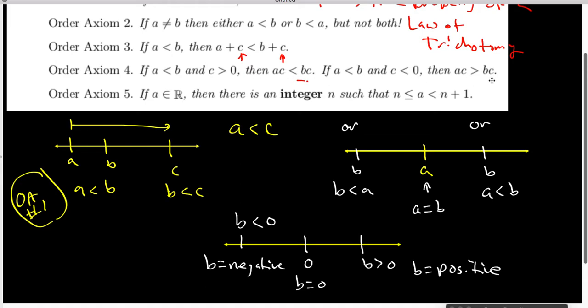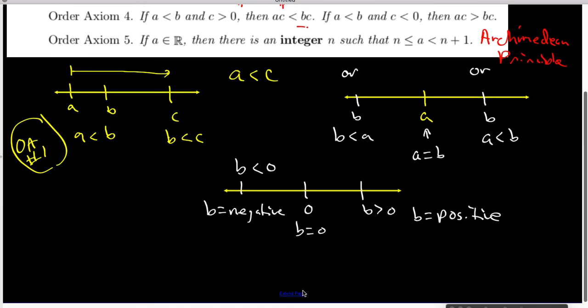The fifth order axiom is that no matter what real number we have, there is some integer named N such that A winds up being trapped between N and N plus one. This one here is usually given the name the Archimedean principle, because Archimedes is the first one who described axiom five. And this is actually a slight variation on the way Archimedes described it.